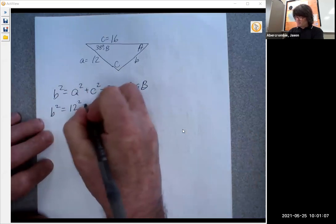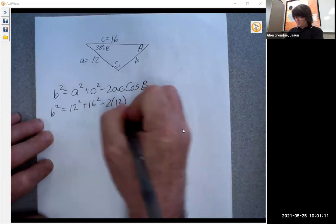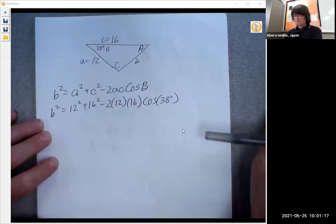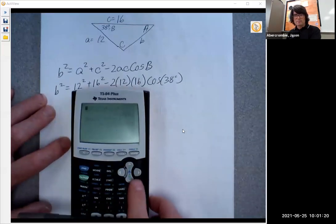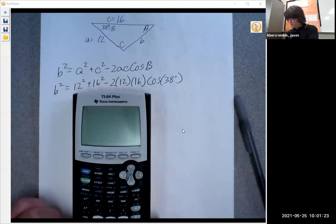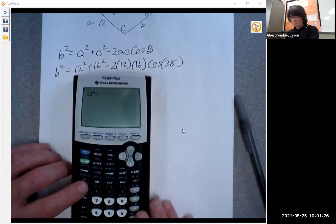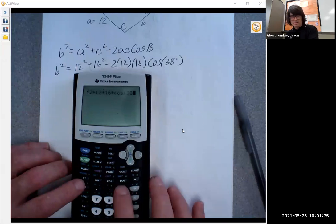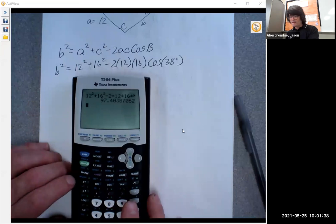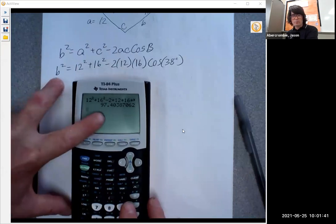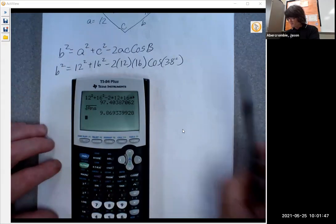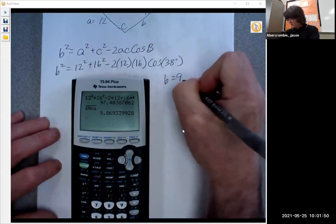So A squared plus C squared minus 2 times A times C times cosine 38. Now use my calculator to figure that out. We'll have 12 squared plus 16 squared minus 2 times 12 times 16 times cosine 38. So B squared will equal 97.4. And then to get B, I'll just take the square root of that number and we'll say B equals 9.87.